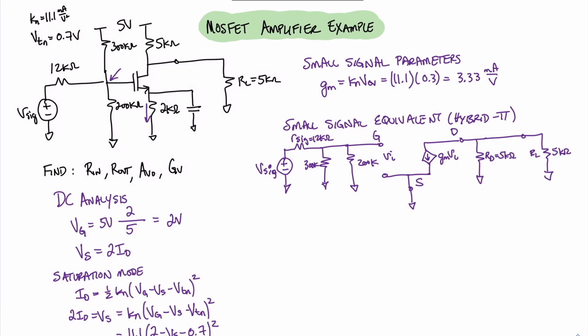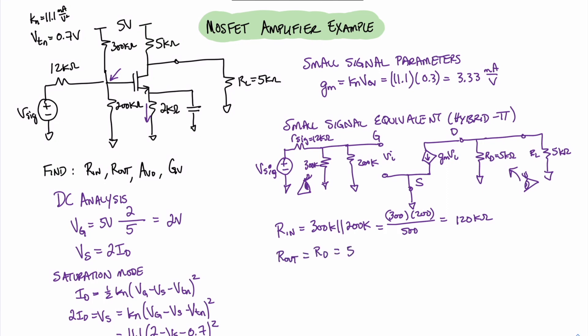Looking in at the input of this circuit, the resistances we see are the parallel combination of R1 and R2, the 300 kilohm and the 200 kilohm resistors, and that will become our input resistance. The parallel combination equals 300 times 200 divided by 500, which gives us 120 kilohms. Looking in from the output into the equivalent circuit, the only resistance we have is the drain resistor, so our output resistance equals 5 kilohms.